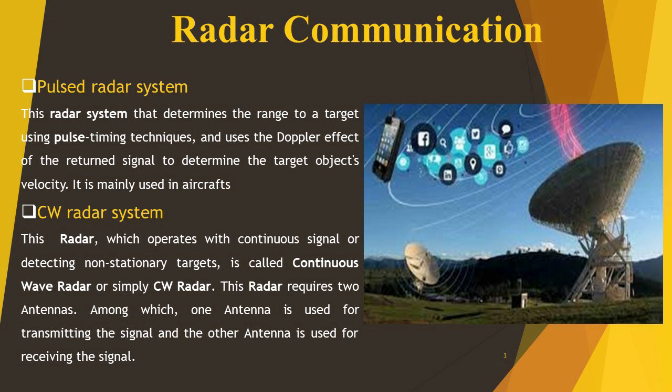The pulse radar system determines the range by using pulse timing techniques and uses the Doppler effect of the return signal. It is mainly used in aircraft. CW radar, where CW means continuous wave radar, requires two antennas — one antenna is used for transmitting the signal and another for receiving the signal.